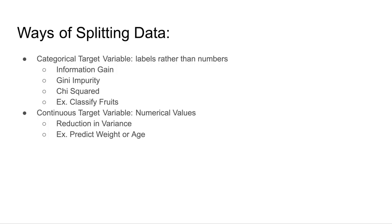The first three are specifically used for categorical target variables — basically variables that are labels instead of numerical values. For example, when we want to classify fruits, we get specific labels such as the color of the fruit or whether it tastes good or not. The last way, reduction in variance, is specific to continuous target variables — basically numerical values. So if we want to predict whether a person will get diabetes, we get data such as their weight and age, which are numerical values, so we use reduction in variance to split that data.